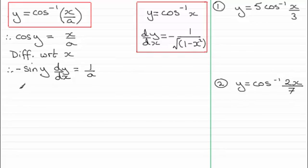So rearranging this now for dy/dx, we therefore end up with dy/dx equals 1 over minus a times sine y.